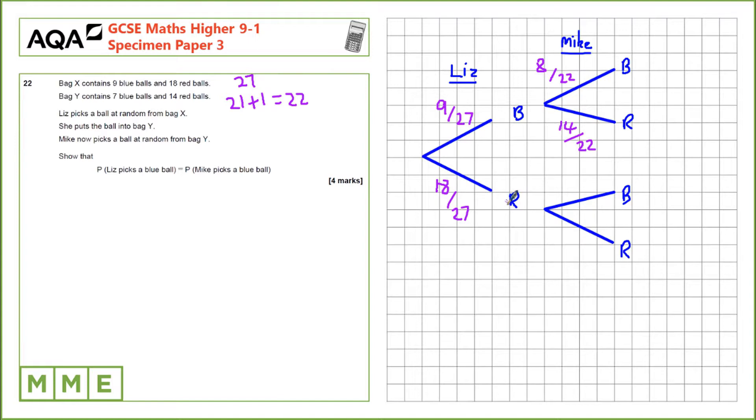In the case that she picks a red ball, she'll put that into bag Y, so the probability of picking a red ball then is 15 over 22, it's one higher than it would have been, and the probability of picking a blue ball is 7 over 22.